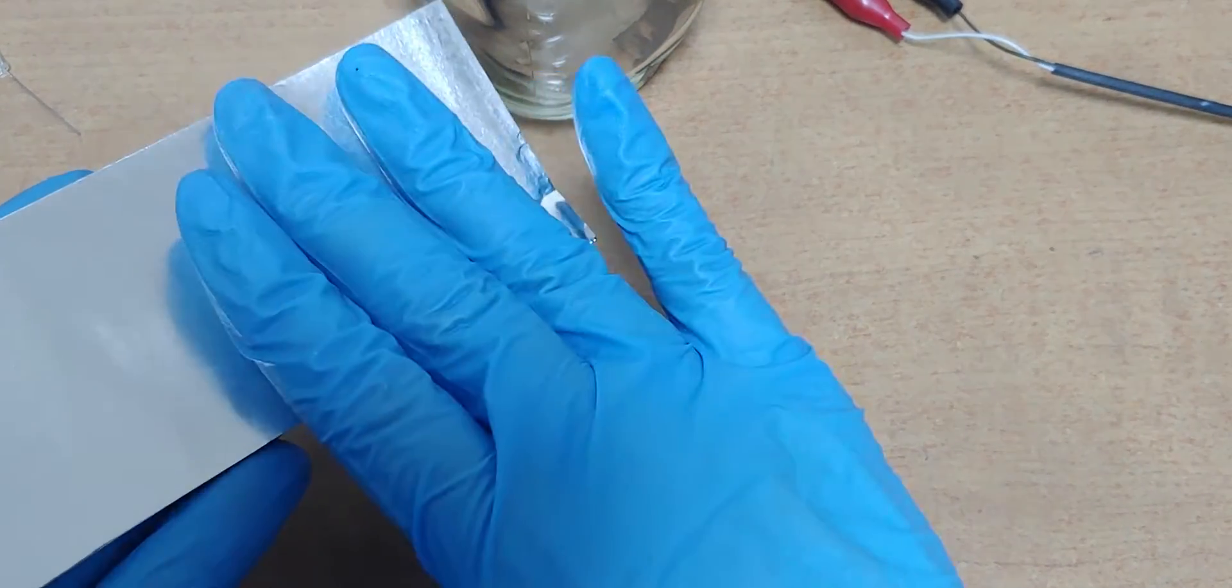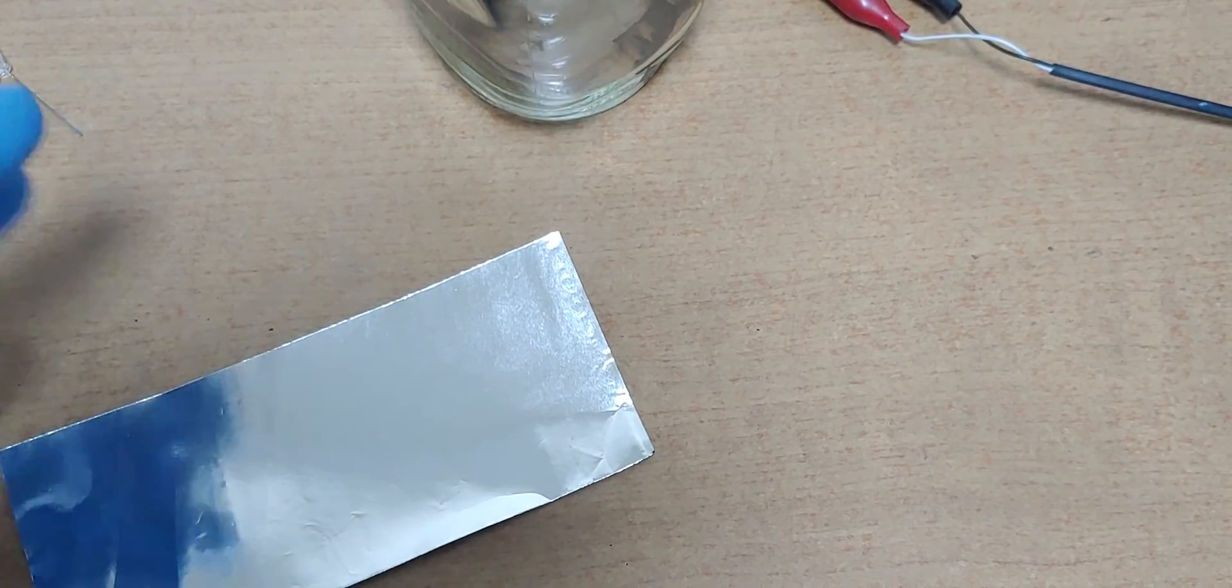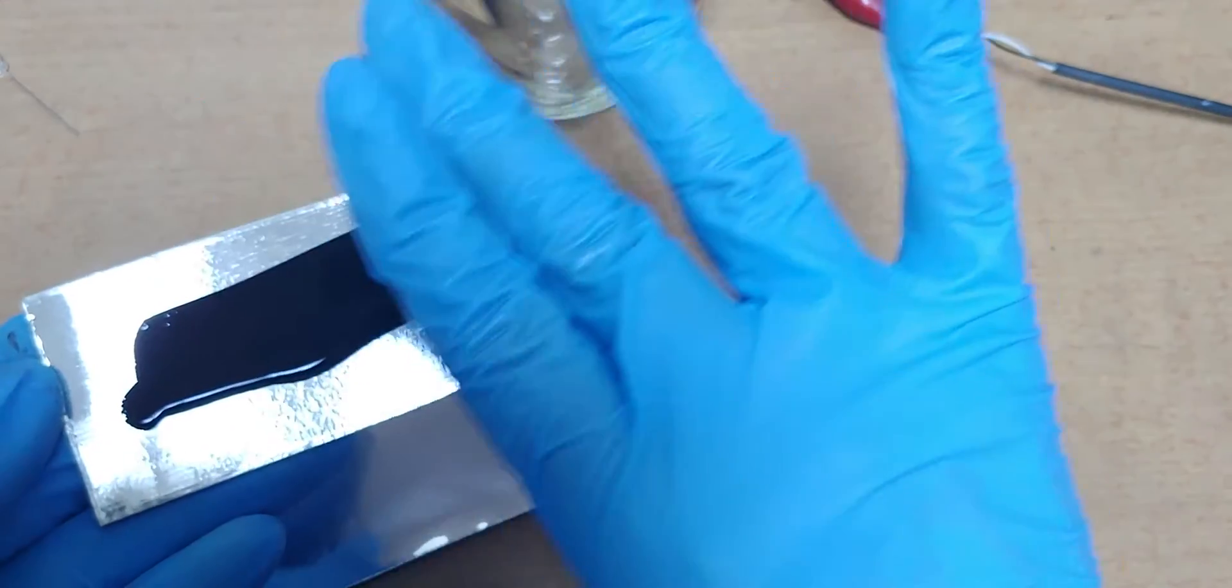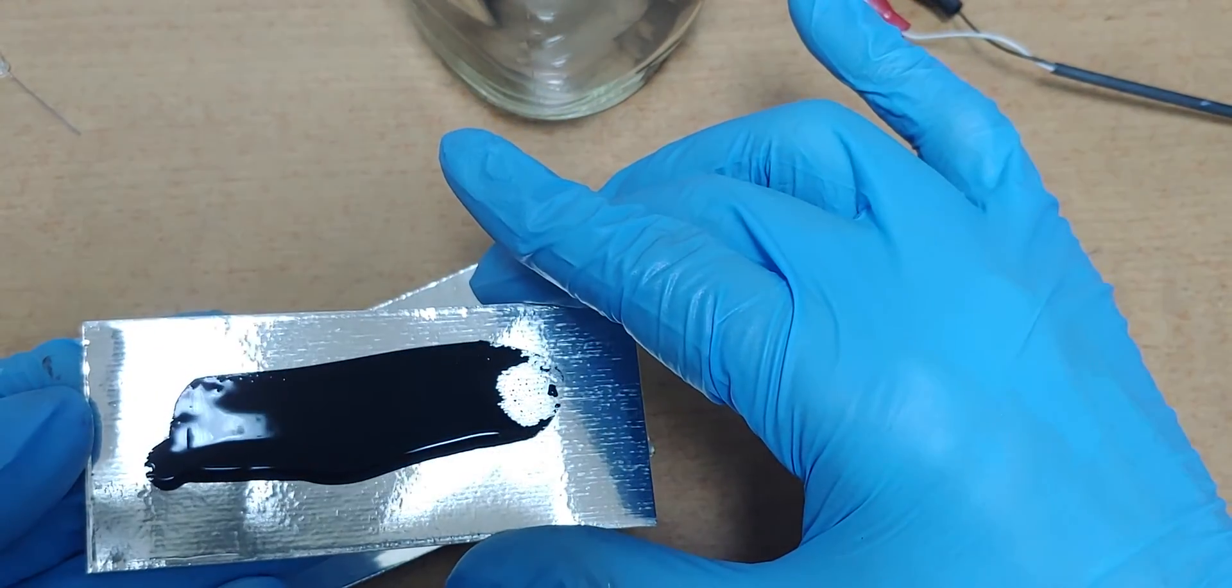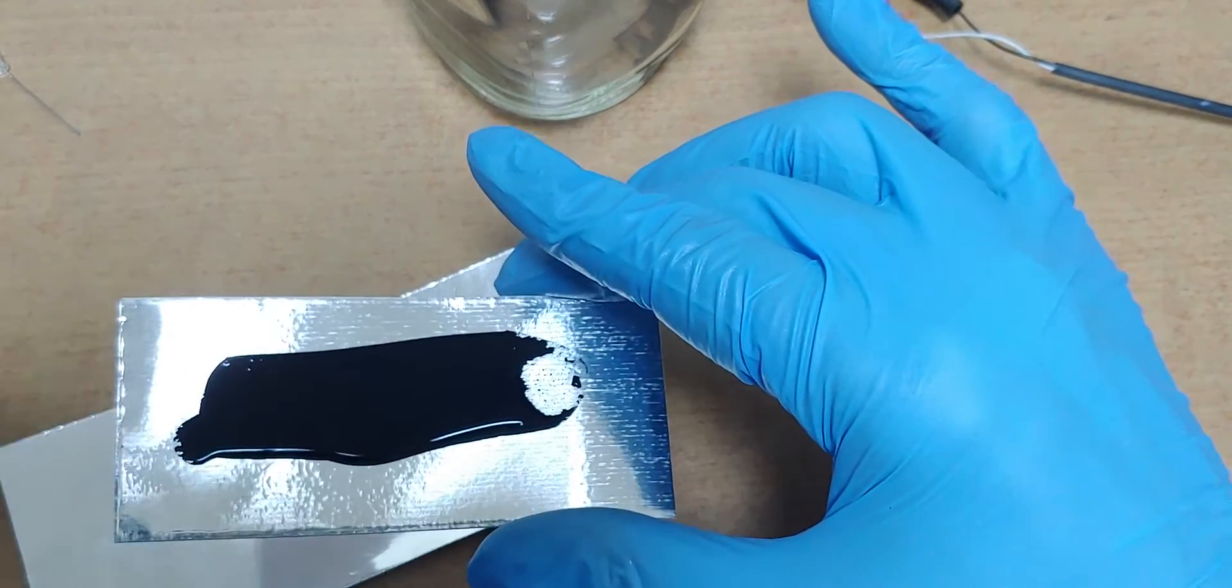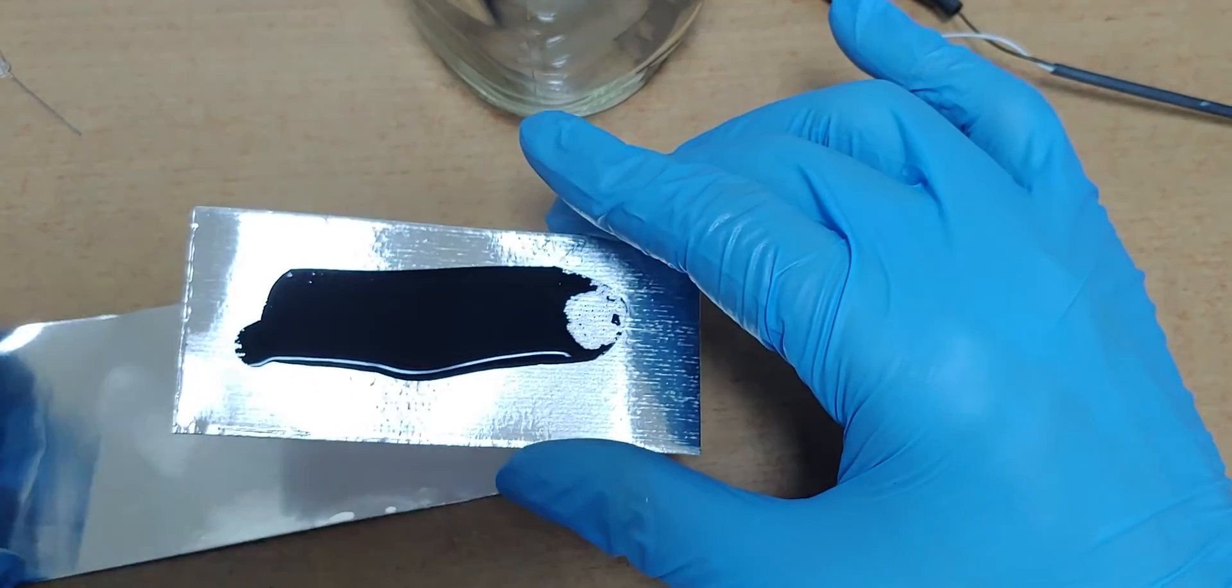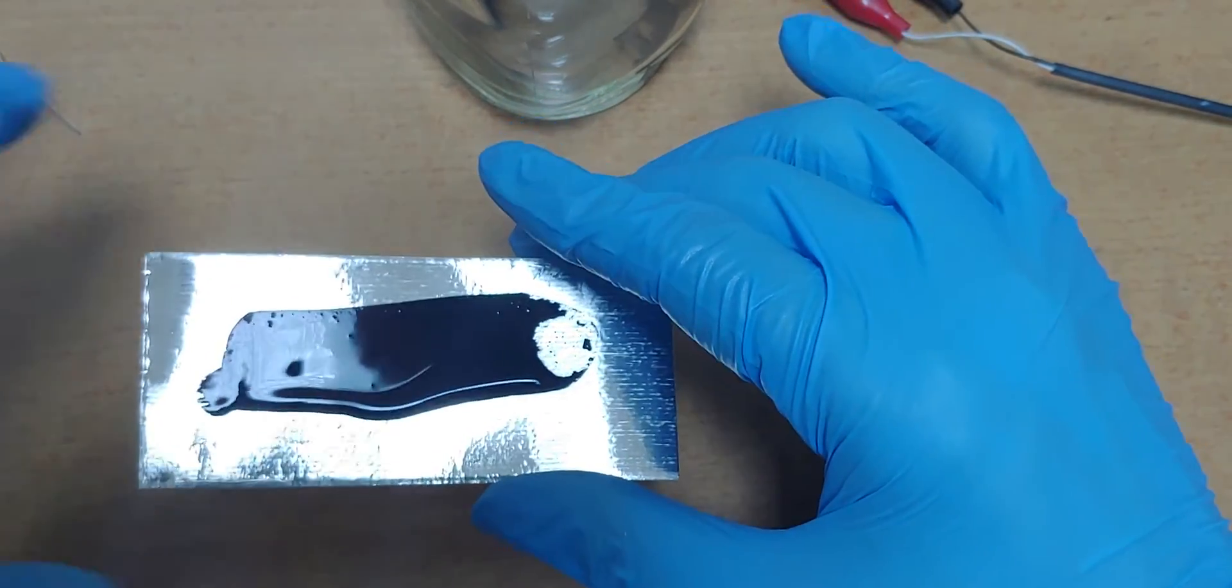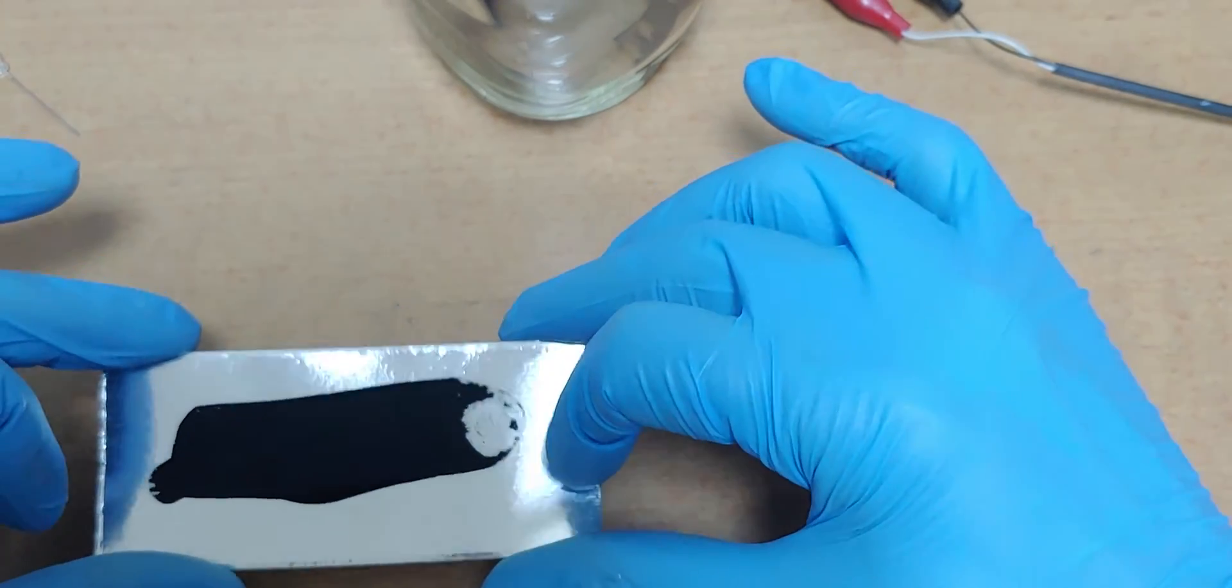So we can coat graphene onto the aluminum. I'm sorry because I'm Korean, my English is a little bit poor. I hope you can understand it.